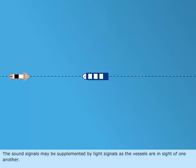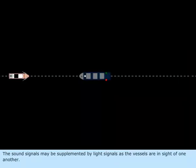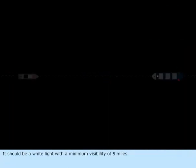The sound signals may be supplemented by light signals as the vessels are in sight of one another. It should be a white light with a minimum visibility of five miles.